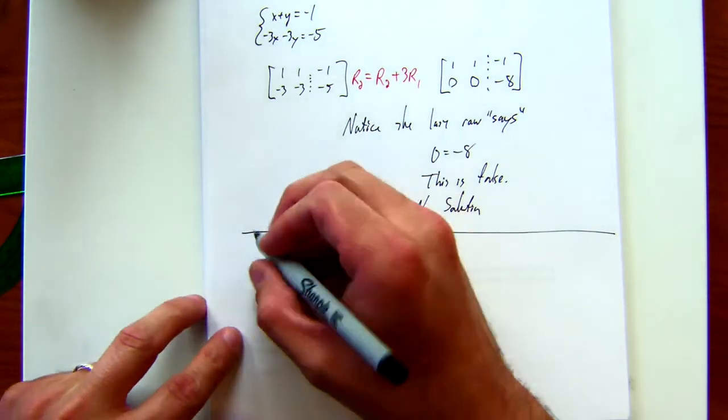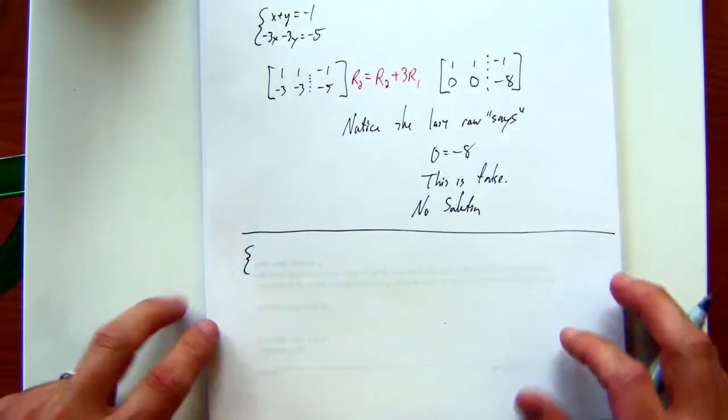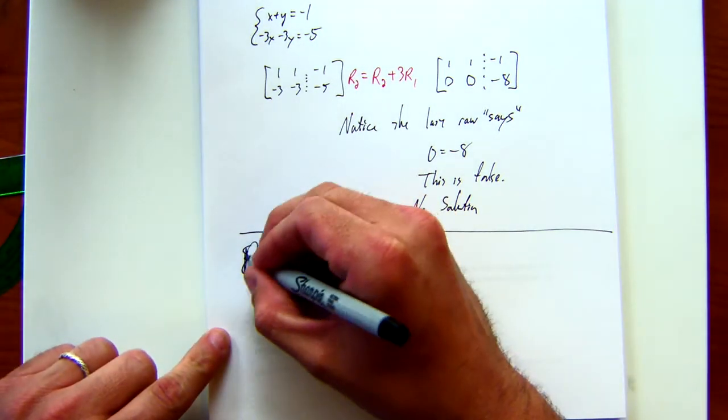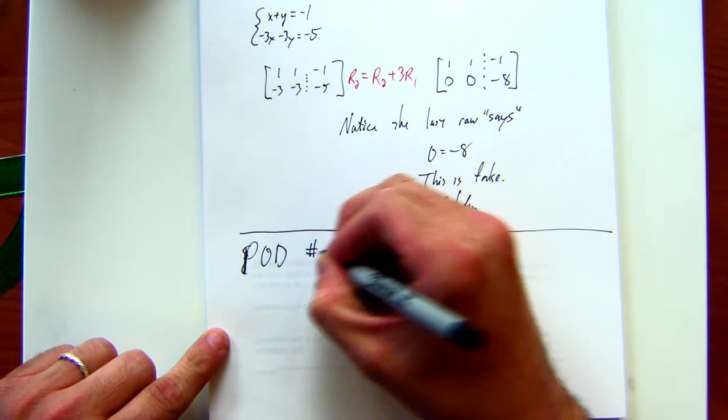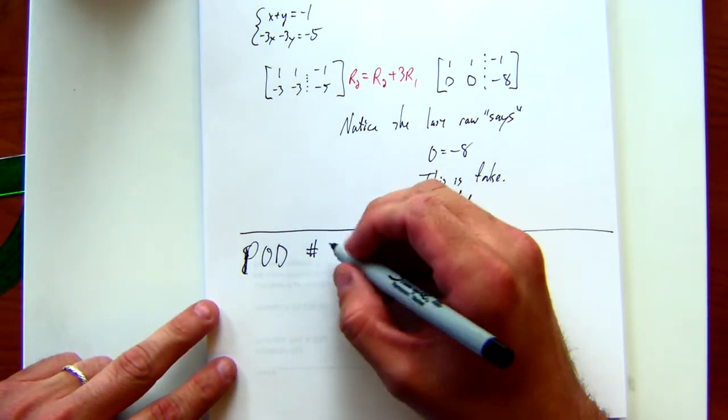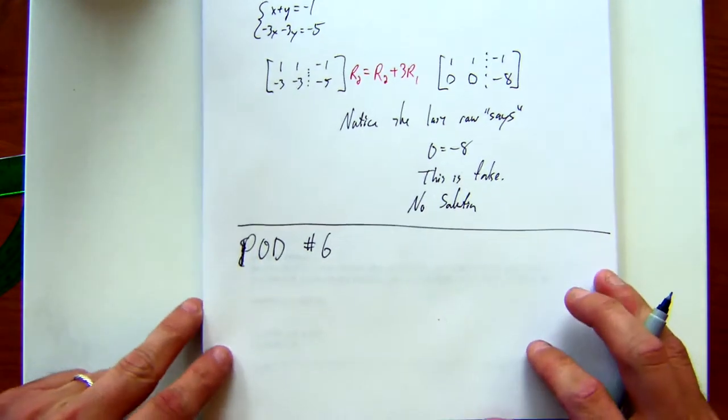Let's do another example, though. I think this one could be a good problem of the day. I think this will be a good problem of the day. Problem of the day number, what are we on? Six, aren't we? I think it's six.